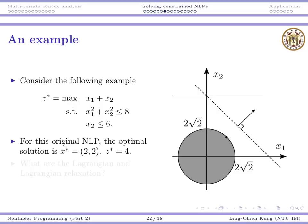Anyway, graphically we can see the optimal solution is here. x star is (2, 2), and z star is 4. Let's try to do algebra on this problem.